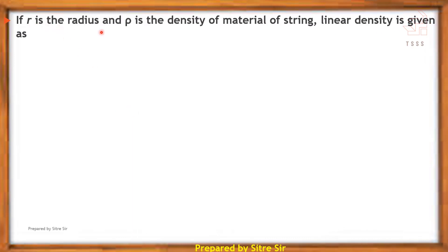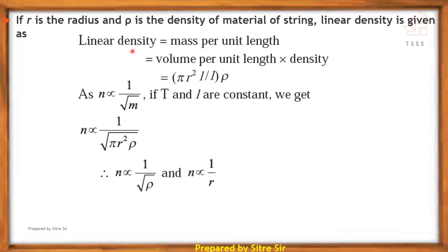If small r is the radius and rho (ρ) is the density of the material of the string, then linear density m equals mass per unit length, which equals volume per unit length into density. For a cylindrical wire, volume per unit length equals πr², so m = πr²ρ. Therefore n is proportional to 1/√m when T and l are constant.